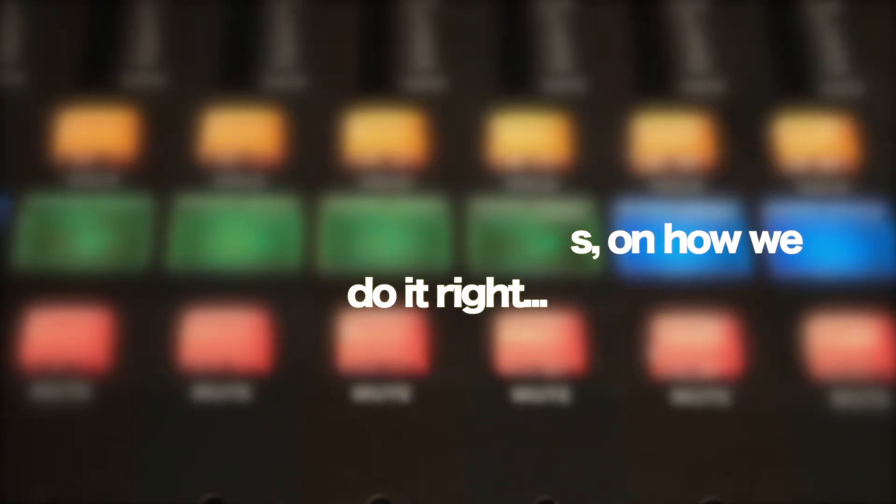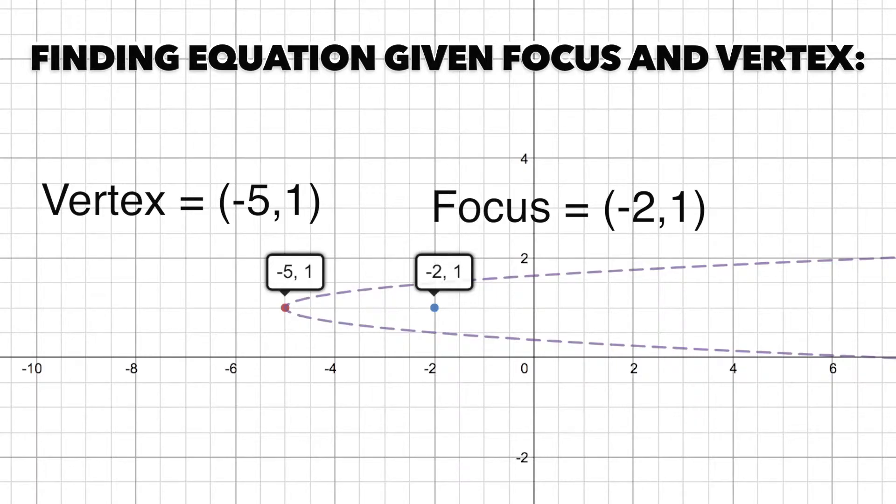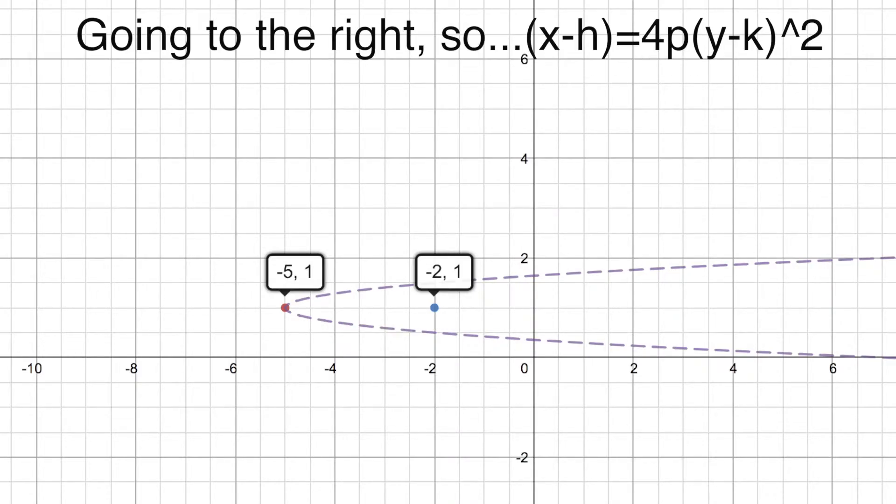If you got focus and vertex, you can't make the ground. The distance between them can be solved with math. You know that this distance will equal the P. Times it by 4, now listen to me. Put it in the equation with vertex included. This is what Chabarachimedes concluded.